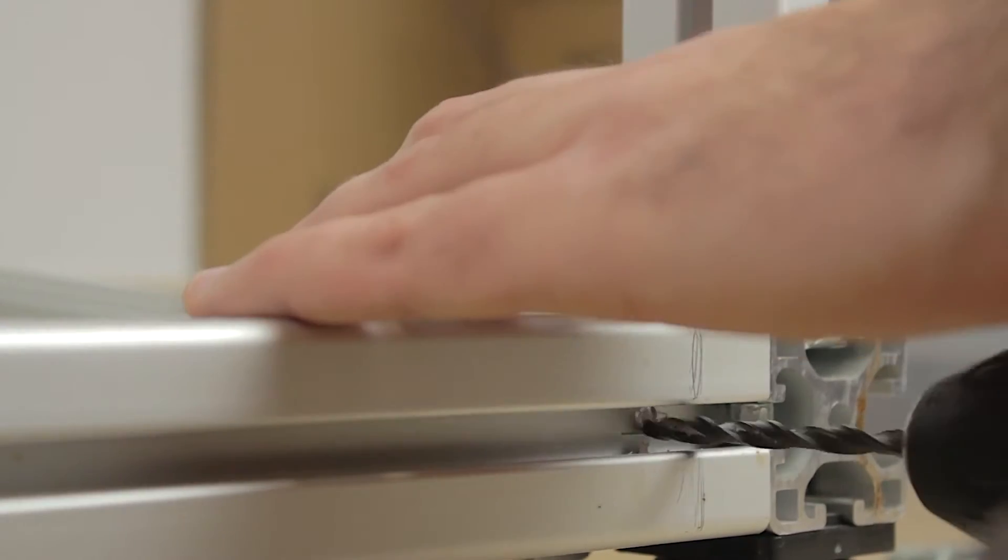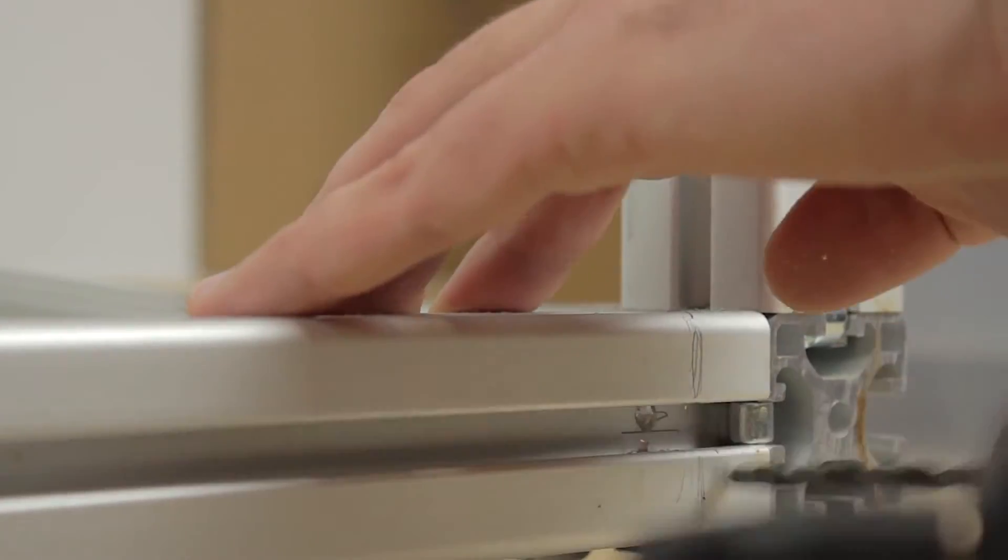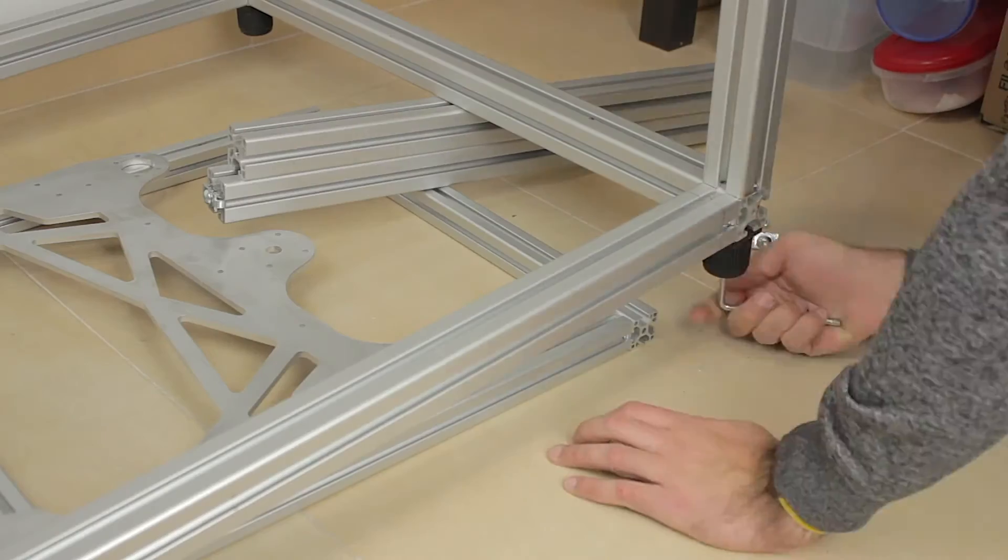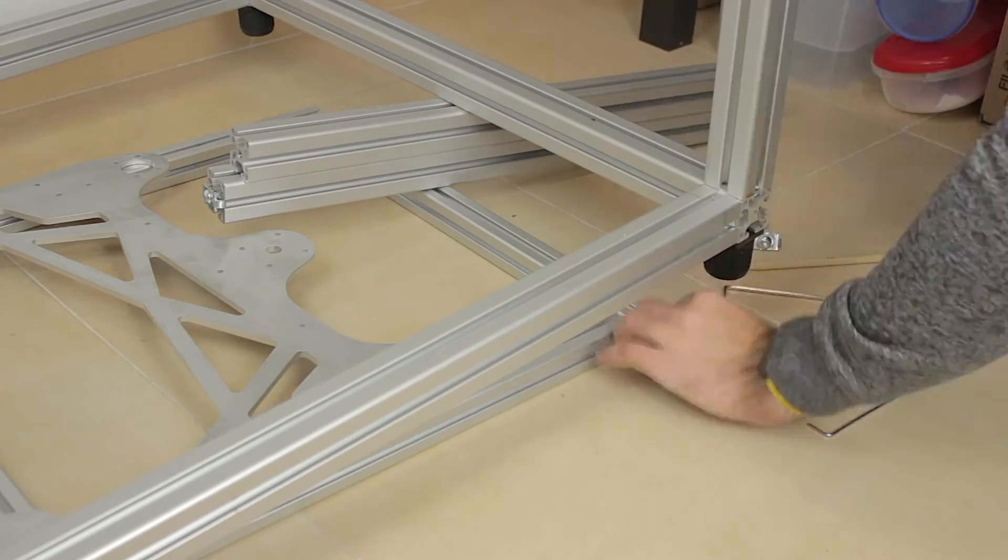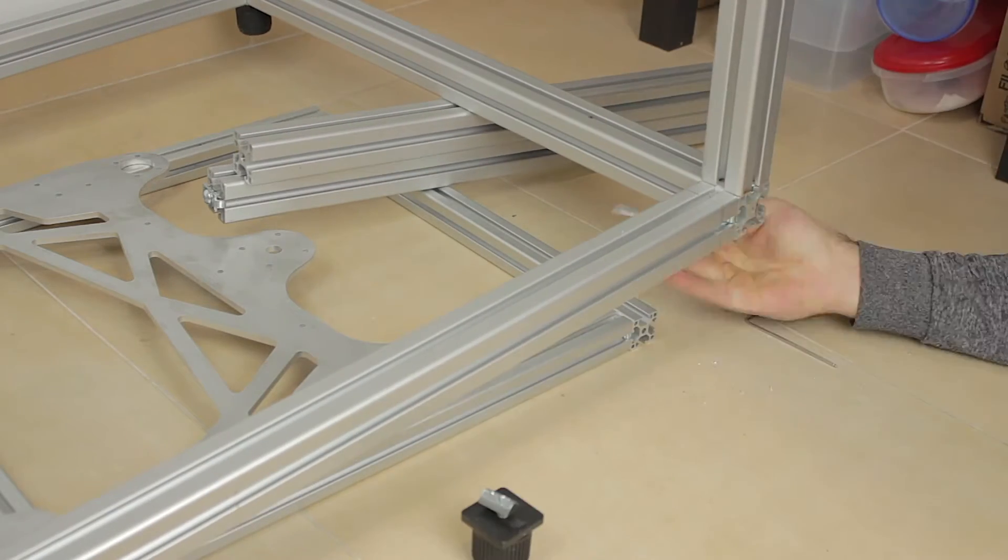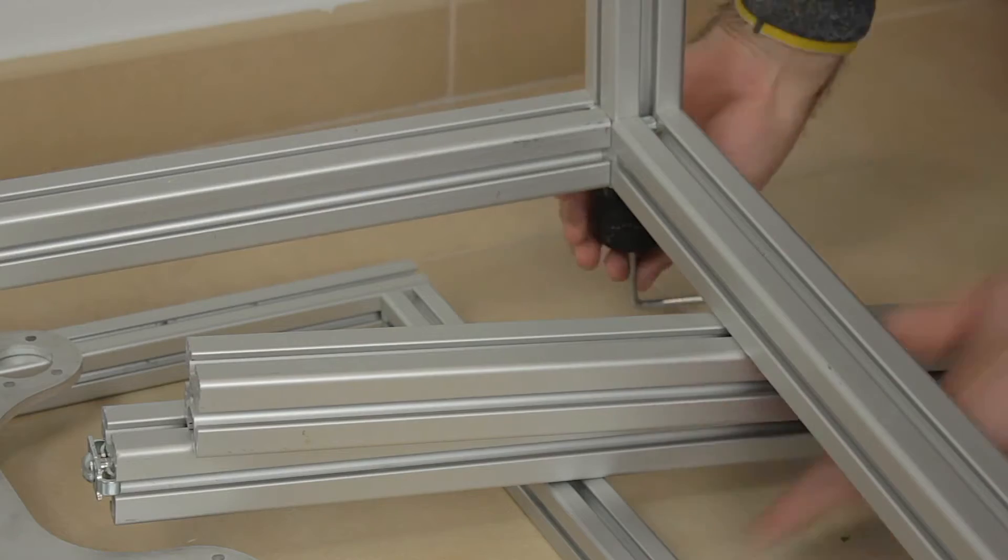So first I tried drilling the hole with my handheld drill but it was quite impossible and especially in this position. So what I decided to do is disassemble the two long profiles of the bottom of the structure to bring them to the bench drill and make the holes properly.